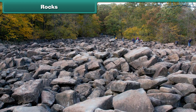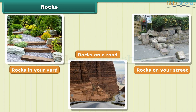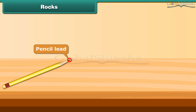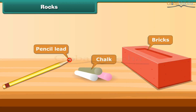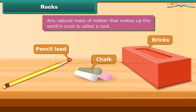Rocks are all around us. You can see rocks in your yard, on your street, on a road — everywhere you look. Pencil lead, chalk, and bricks are all rocks. Any natural mass of matter that makes up the earth's crust is called a rock.